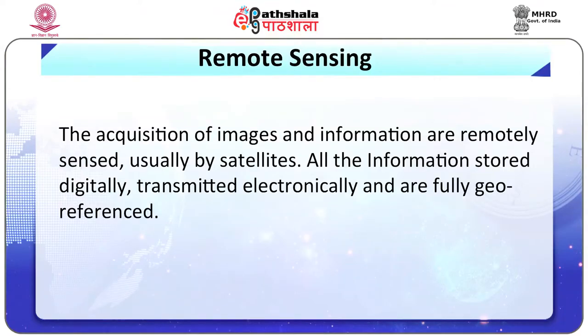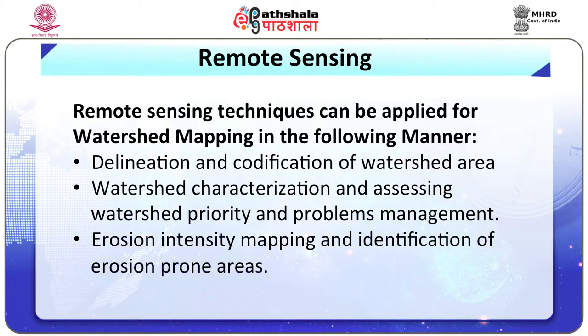The second tool is remote sensing — the acquisition of images and information remotely, usually by satellites. All the information is stored digitally, transmitted electronically and is fully georeferenced. Remote sensing techniques can be applied for watershed mapping in the following manner: first, delineation and codification of watershed area; second, watershed characterization and assessing watershed priority; and evaluation of problems, potentials and management requirements.